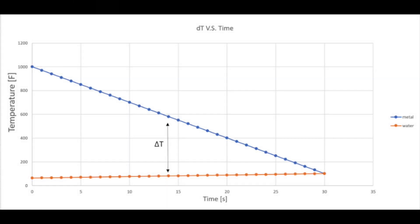The figure shown depicts the change in the temperature difference between the water and the metal with respect to time. Due to the high heat capacity and amount of water, the fluid acts like a heat sink. The changes in the differences of the temperatures between the metal and the water is almost all due to the decreasing temperature of the metal and not the increasing temperature of the water.